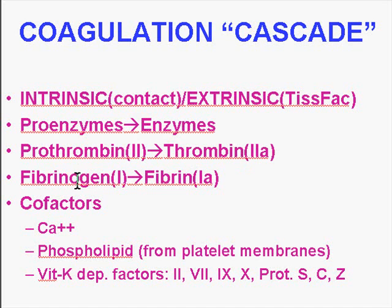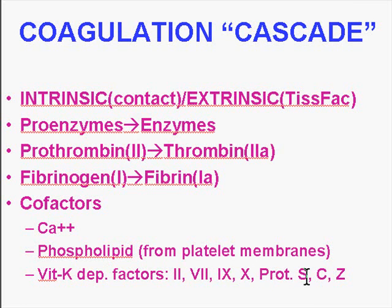Finally, thrombin then ultimately changes fibrinogen, which is factor 1, into fibrin, which is factor 1a. There are a whole bunch of cofactors: calcium is one, phospholipids from platelet membranes are essential, and there are vitamin K-dependent factors made in the liver — factors 2, 7, 9, and 10 — as well as other proteins like protein S and protein C, which primarily act as anticoagulants or checks on the cascade.